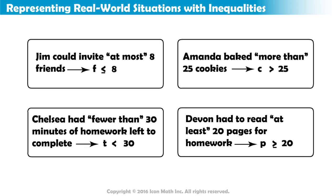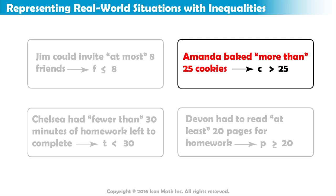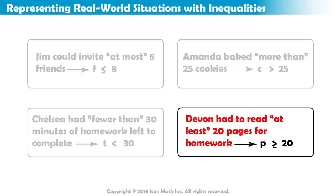Let's recap. When Jim could invite at most eight friends, the symbol we used was less than or equal to. Amanda baked more than 25 cookies — more than means greater than. Chelsea had fewer than 30 minutes of homework left to complete, and the symbol we used to represent fewer than was the less than symbol. Finally, Devin had to read at least 20 pages for homework — at least meant greater than or equal to.